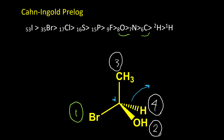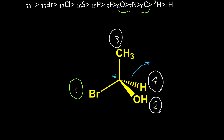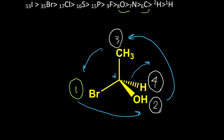And step three: move from number one to two to three. If it is clockwise, we call it R. And if it is counterclockwise, like this example, the configuration of the chiral center is S.